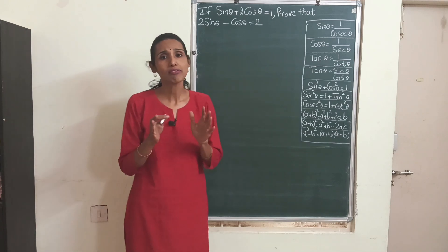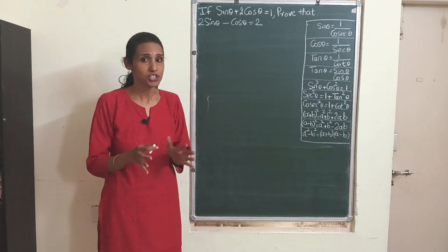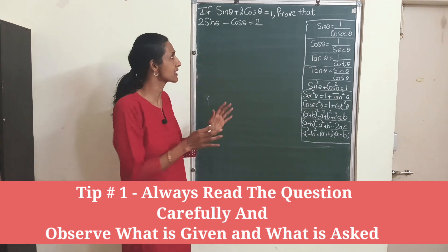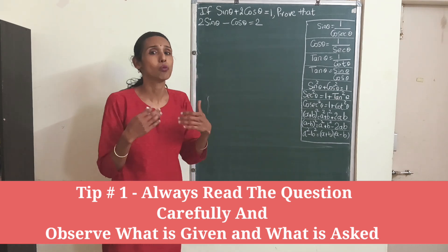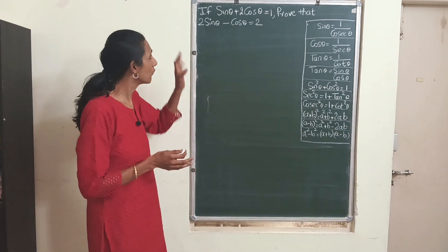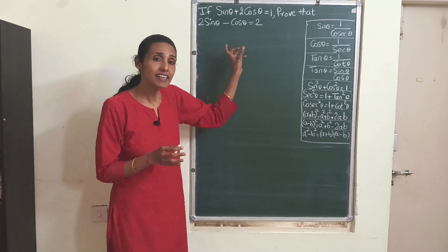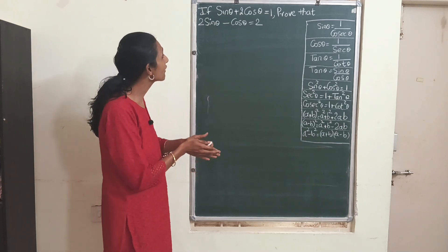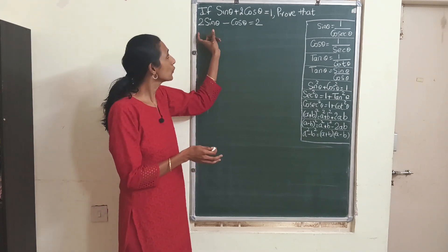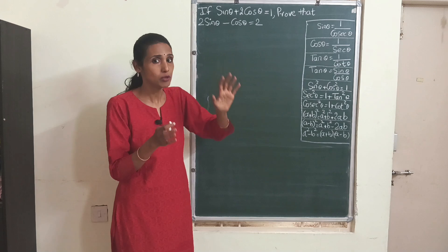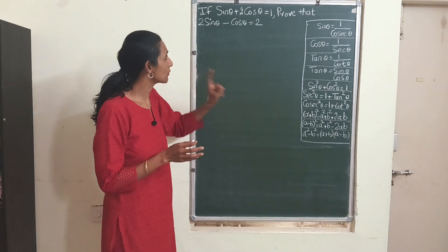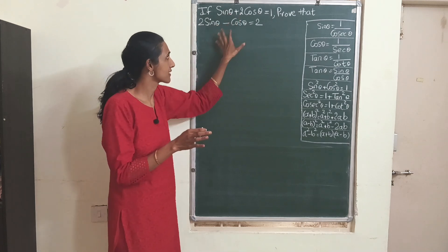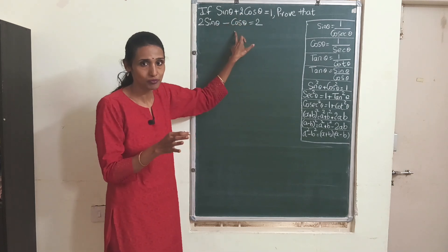The very first tip in these type of questions is always read the question very carefully 2 to 3 times and understand what they have given and what we have to prove. What they have given is sin θ plus 2 cos θ equals 1. What we have to prove is that 2 sin θ minus cos θ equals 2. We can observe that sin θ and cos θ both are as it is in the given as well as prove that. The ratios has not changed.